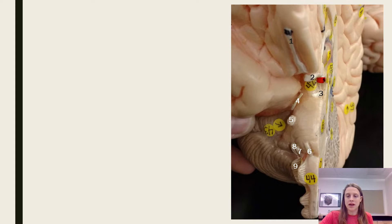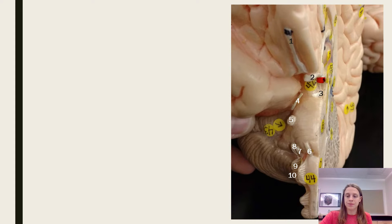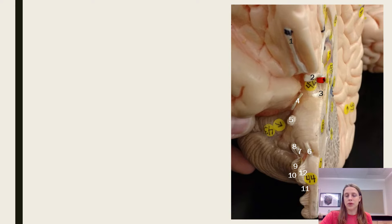You drop directly down from number eight and that's number nine. Right below number nine is number ten. Off of number ten is a little line which is actually number eleven, and number twelve is in the middle. Between nine, ten, and twelve is where the olives are, although you cannot see them in this picture.